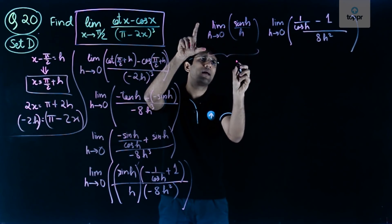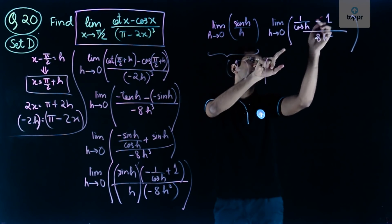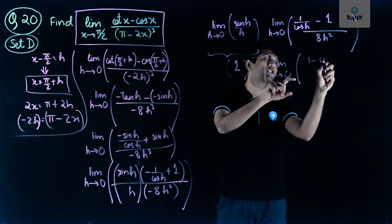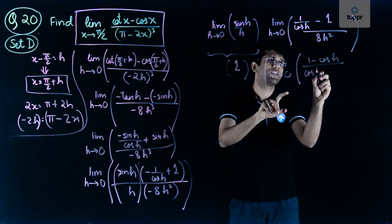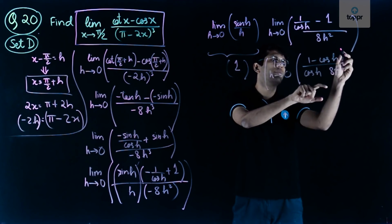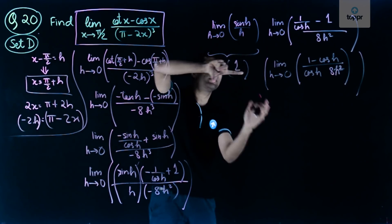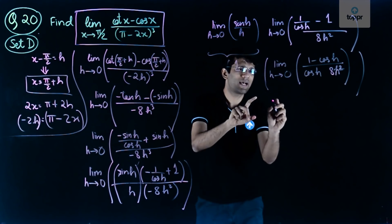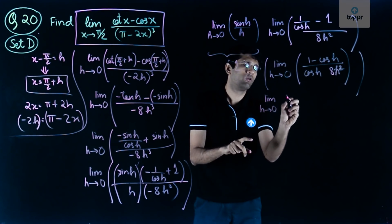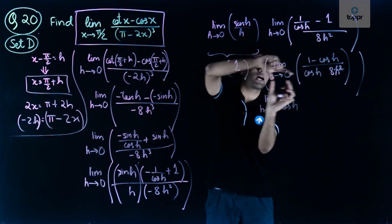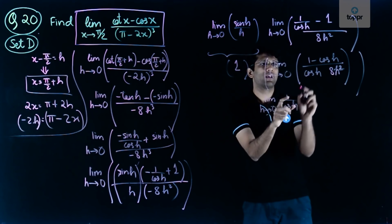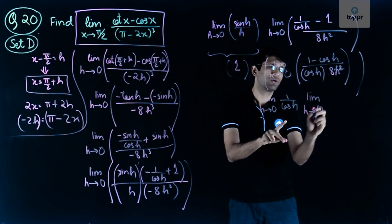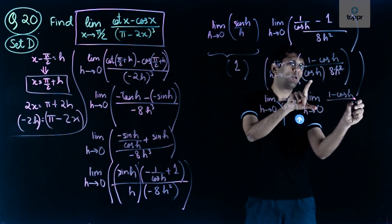These two terms can be split into two separate limits. The first limit is the limit as h tends to 0 of sin h upon h, which equals 1. The second limit as h tends to 0 is (1 minus cos h upon cos h) over 8h squared. We can take cos h out, writing limit as h tends to 0 of 1 by cos h, times limit as h tends to 0 of (1 minus cos h) upon 8h squared.